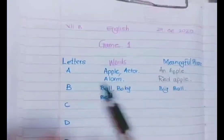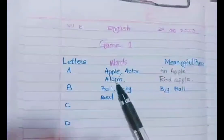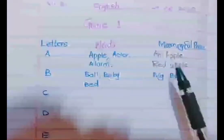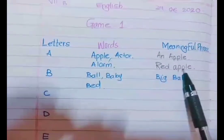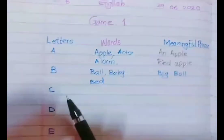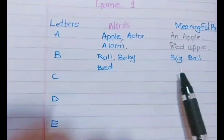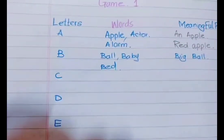You have to write three words for each letter. For example, for letter A I have written: Apple, Actal, Alara. Then what you have to do is make a meaningful phrase or sentence — chhota chhota sentences. Like: 'an apple', 'red apple'. From B you can say ball, baby, bed — and the simple phrase would be 'big ball'. It's very simple.